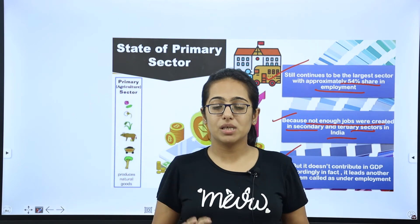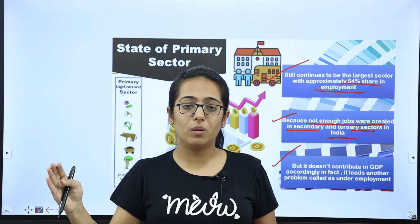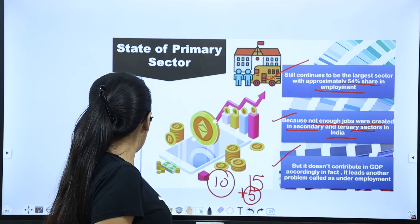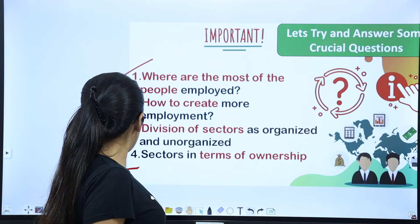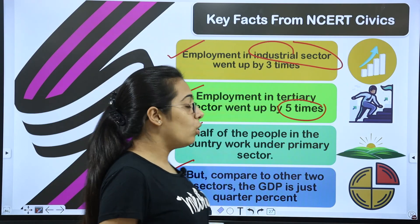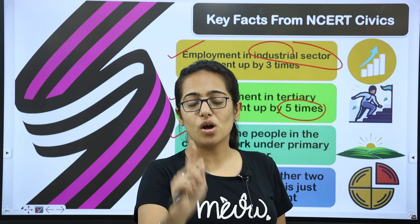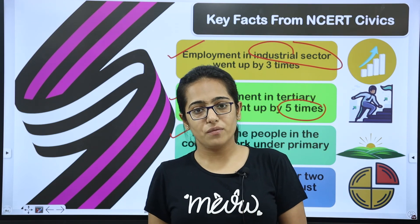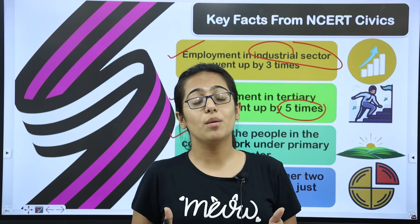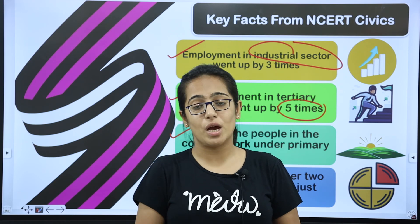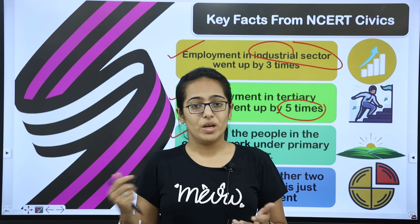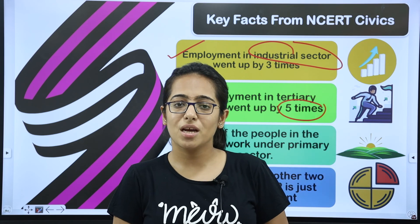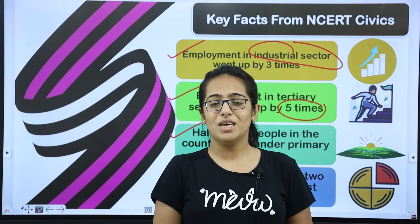So that was a summary of the State of Primary Sector — tertiary and secondary are growing but at a slow rate. This was Part 4 of Sectors of Indian Economy. We will be coming up with Part 5, which covers the most important part of this chapter. Thank you so much — this was Ananya Chawla signing off. Keep learning, keep enjoying!